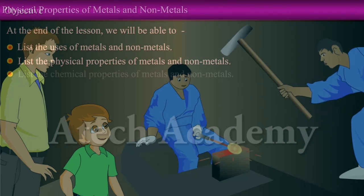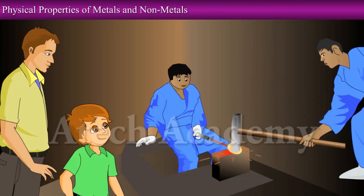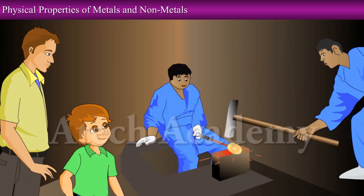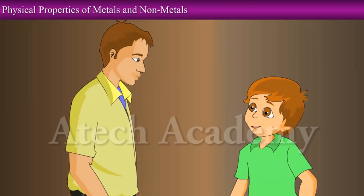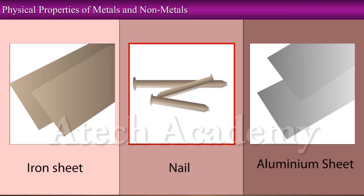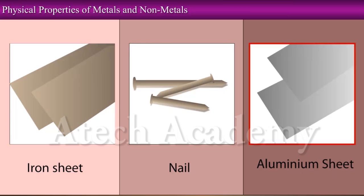What is he doing, dad? He is beating an iron piece to change its shape. But why, dad? This is for many uses, such as to make sheets and iron nails. Metals like aluminium are also beaten to change into sheets.